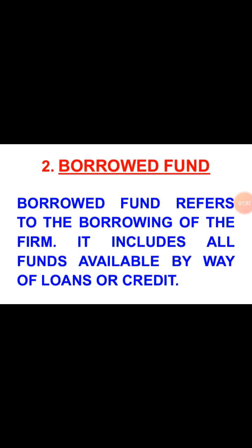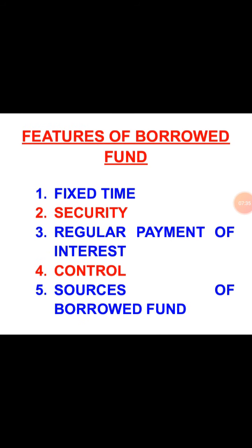Let us talk about the features of borrowed fund. The first feature is fixed time. Borrowed fund or loan is taken by a business for a particular specific time period, and after that time period the loan must be returned. An important point here is that borrowed fund or loan can be taken for short term, medium term, and long term. For example, a loan can be for less than one year, from one to five years, or up to twenty years — depending upon the requirement of the business.